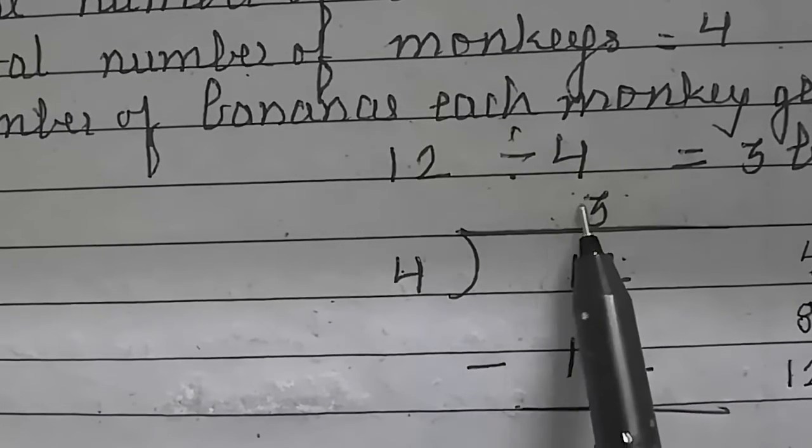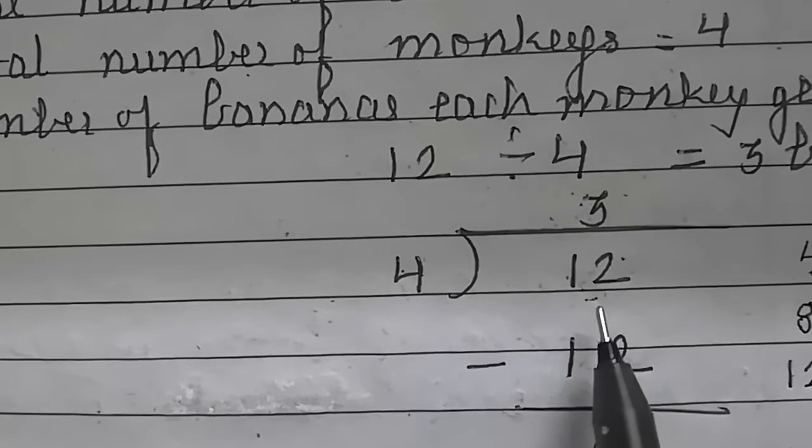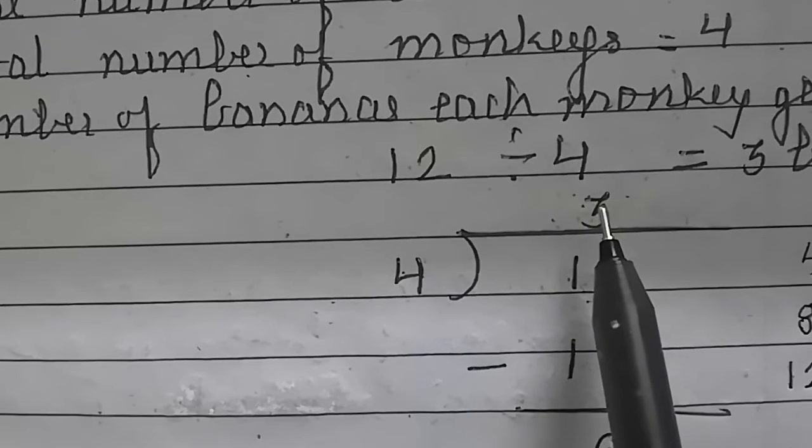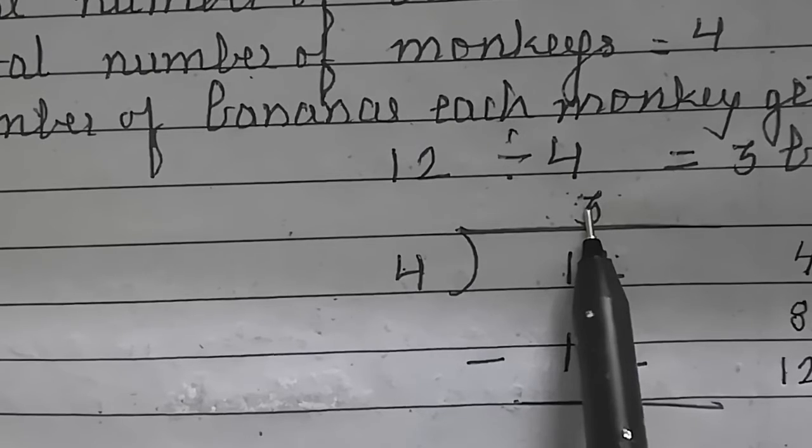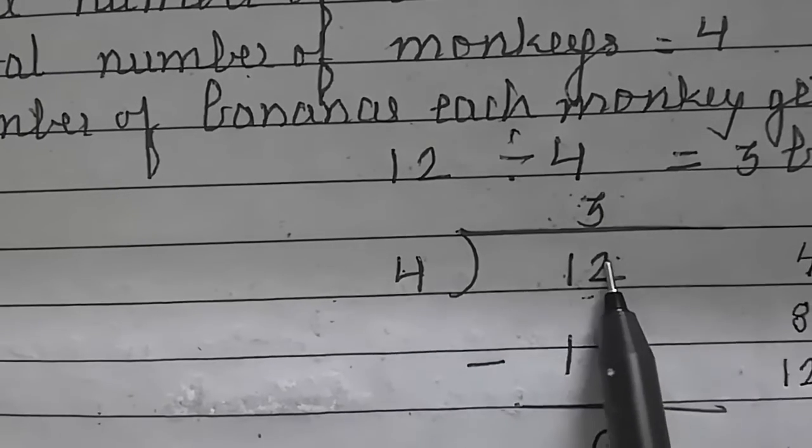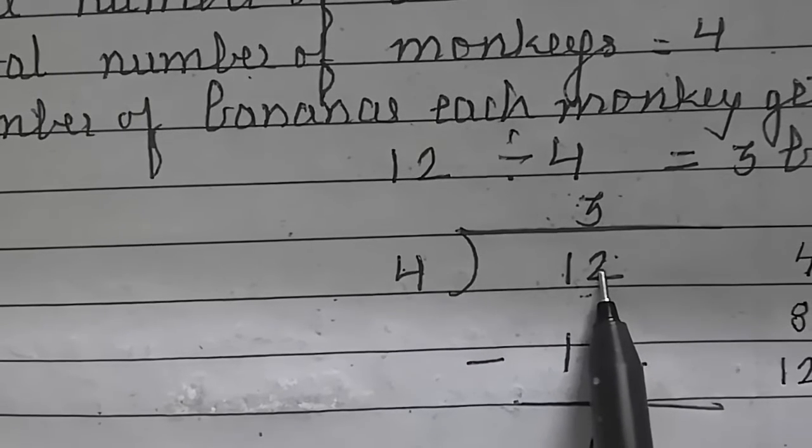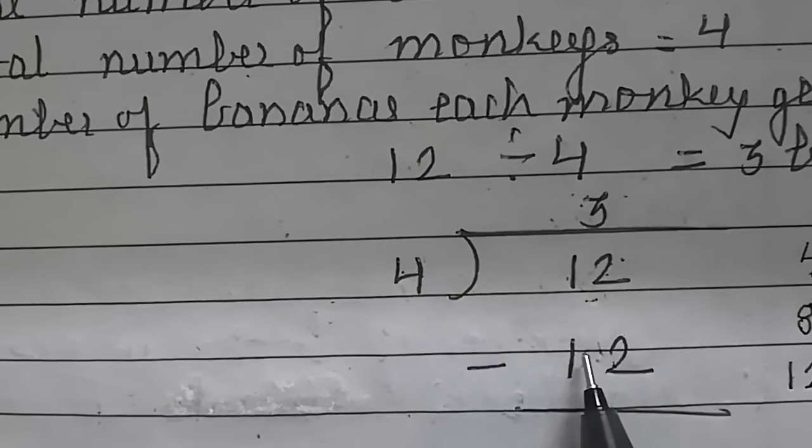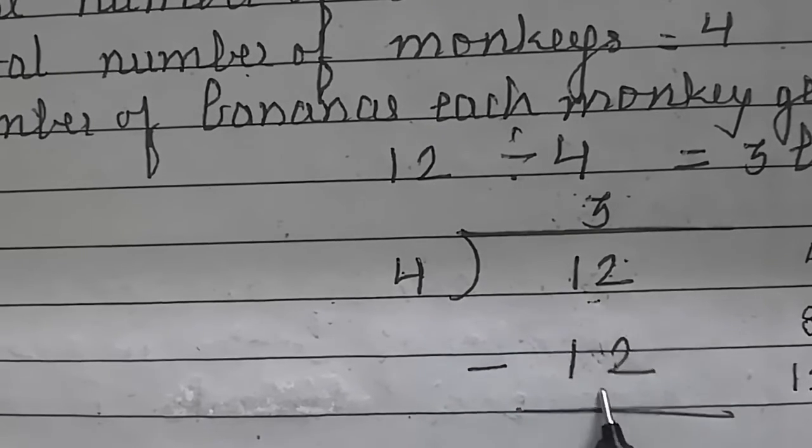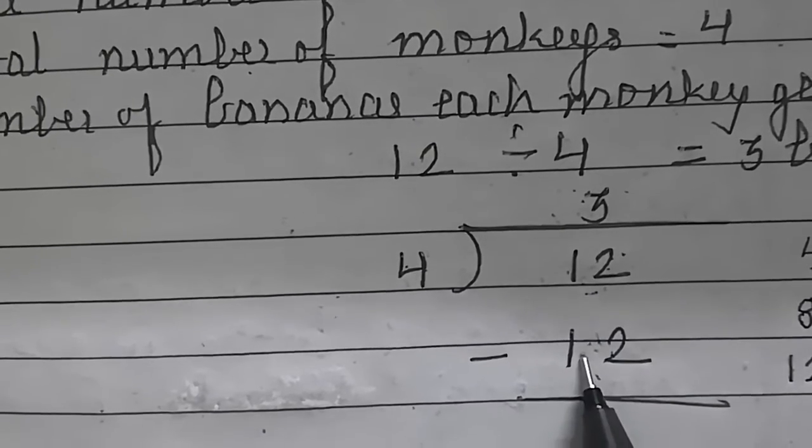So we will write 3 as a quotient here and at the place of a third we got the number 12 that we will subtract from the total number of bananas. So total number of bananas are 12 and the number we got in the table of 4 at the third place is 12. So let's subtract 12 minus 12.